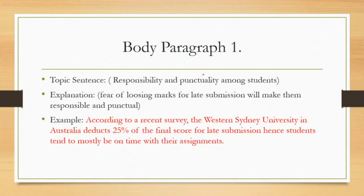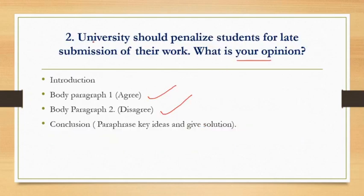Let's look at Body Paragraph 1. Read the question once or twice and understand it: 'University should penalize students for late submission of their work.' First we agree — why do you agree? — and then we disagree — why do you disagree? In the conclusion, we paraphrase the key ideas from Body Paragraph 1 and 2, and then optionally give a solution.